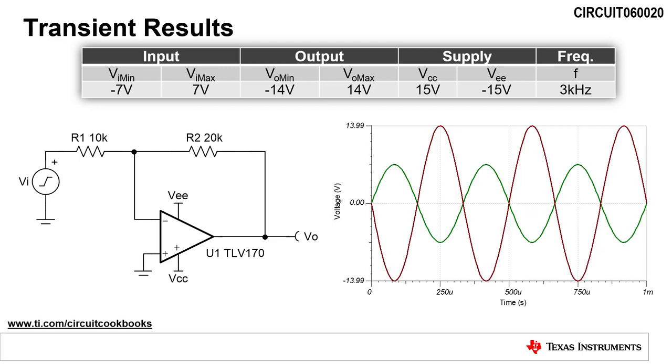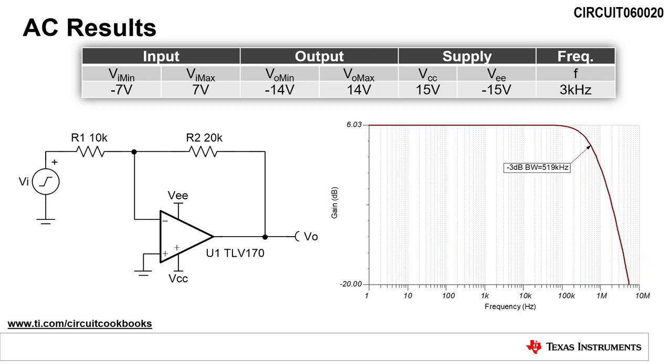Running a transient analysis of the circuit, we see that the output voltage is double the magnitude and inverted from the input voltage. Running an AC sweep analysis, we find that the bandwidth of the circuit is 519 kilohertz. This meets our goal of 3 kilohertz.